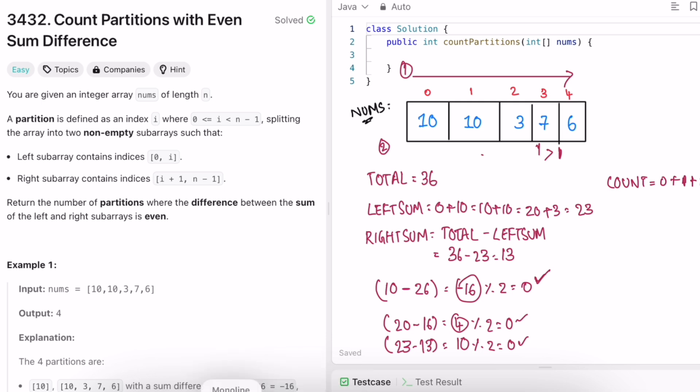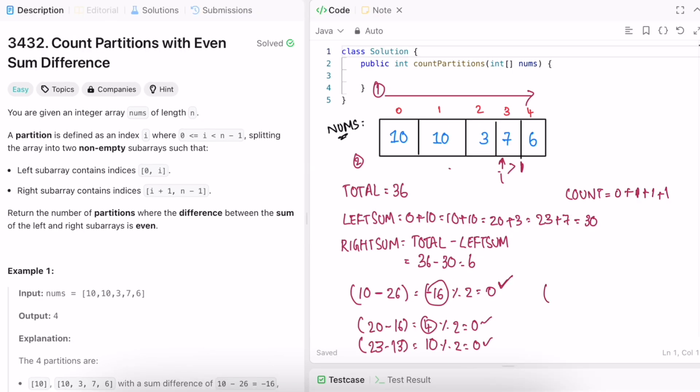The next iteration, i is here. Add 7 to this which is equal to 30. Right sum will become 6. Now we have to do left sum 30 minus 6. This difference is equal to 24. Check if this is even. Yes, it is even. So increment count. Now we stop our iteration here.